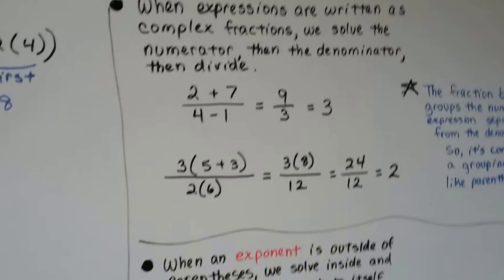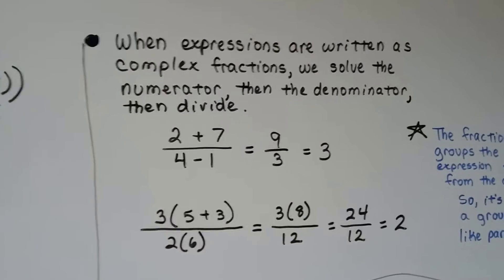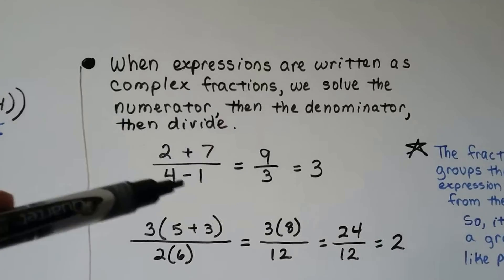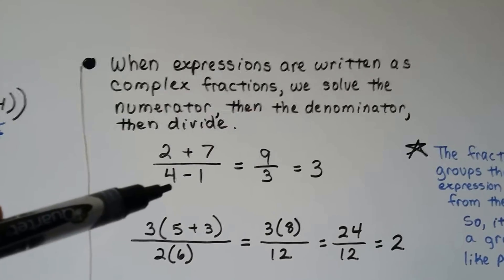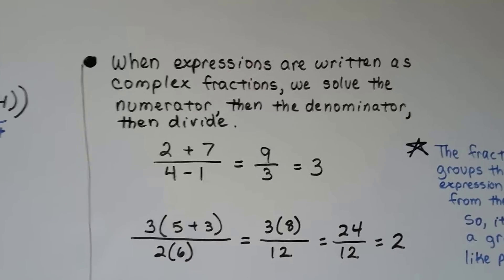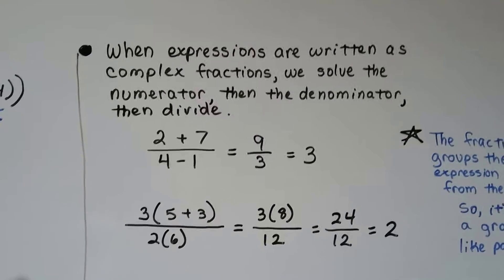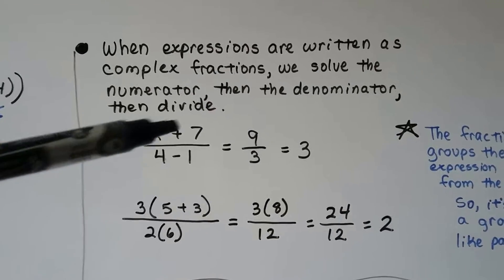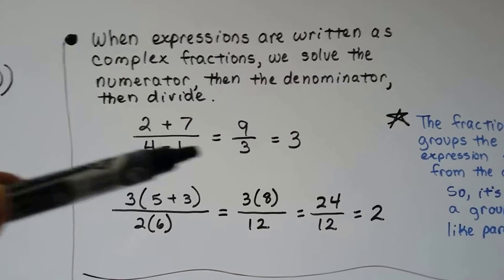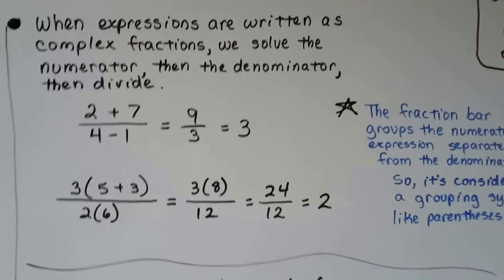When expressions are written as complex fractions — a fraction that has an expression as a numerator and an expression as a denominator — we solve the numerator, then the denominator, and then we divide. So we would do 2 plus 7 to get 9, and 4 minus 1 to get 3, and then divide to get 3.